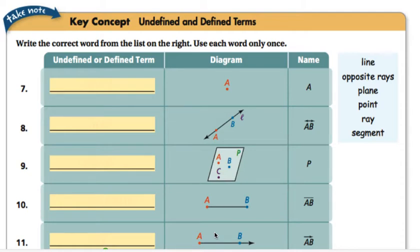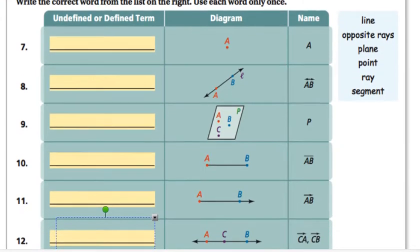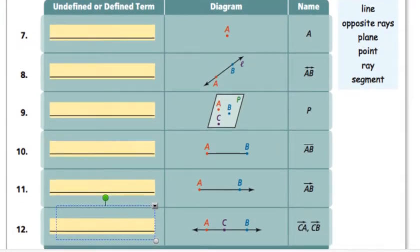On this page, it says write the correct word from the list on the right. Use each word only once. In your book, it defines for you on page 10 what all of these things are. It shows you a diagram of each of these things, and it also shows you how they are labeled appropriately in geometry. We want to use each of these only once.